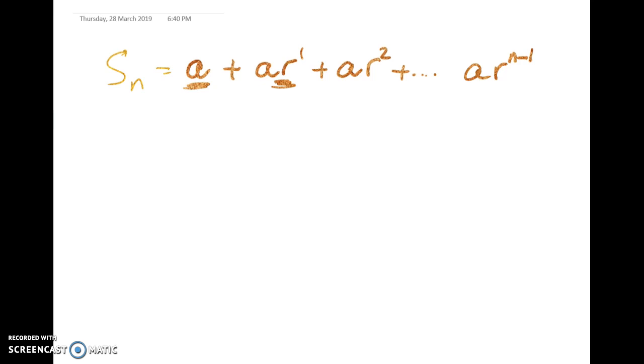Now somehow we want to go from that to having this thing here. Well what we might start by doing is multiplying everything through by r. And then we're going to find that a whole lot of stuff magically starts to simplify. So if we multiply through everything by r, this is what we're going to get.